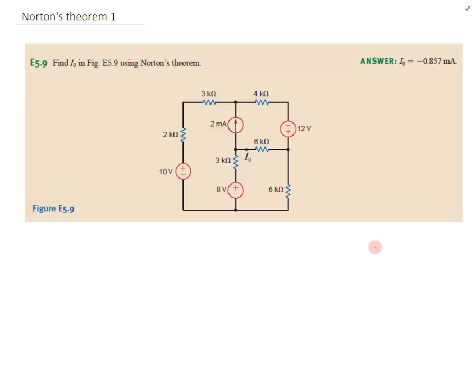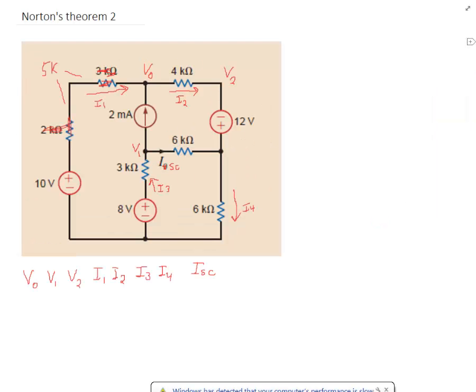We're going to solve learning assessment E5.9 from the textbook, Norton's Theorem. We start out by simplifying the circuit a little bit and then labeling all currents and voltages, node voltages. Here I just combined the 3k and the 2k into a 5k right here.